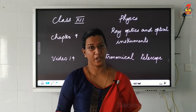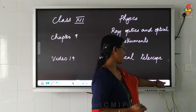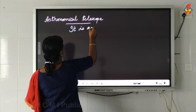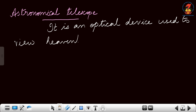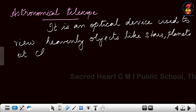Hi students, in this video we are going to study about Astronomical Telescope. What is an Astronomical Telescope? It is an optical device used to view heavenly objects like stars, planets, etc. clearly.